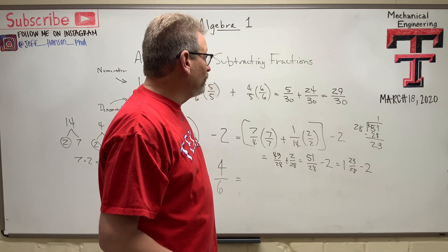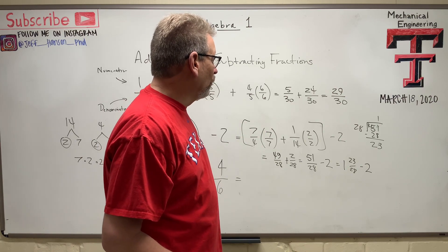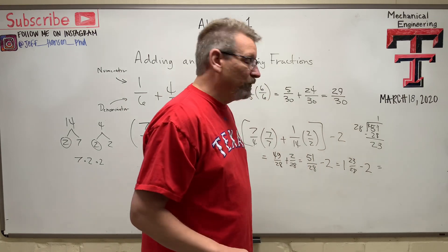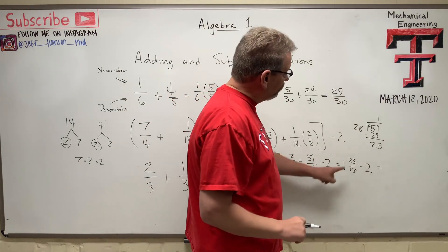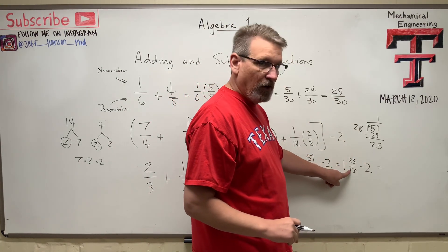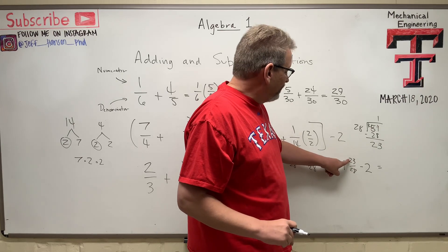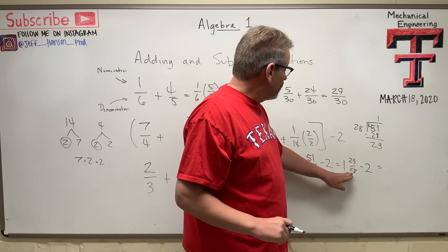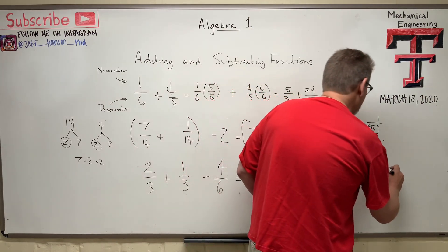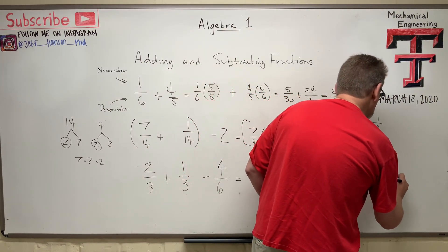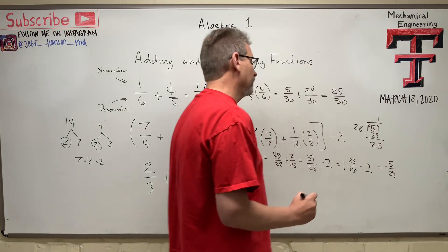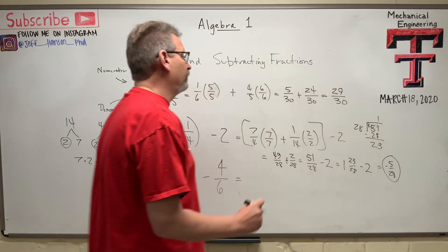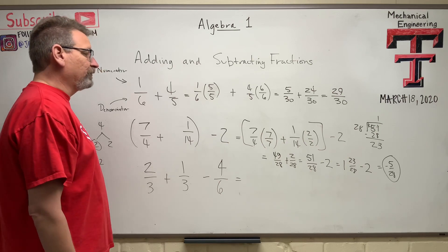So if you subtract 2 from that, you get what? And here's the way I do that. How close is 23 over 28 to being a whole thing? Well, it's only 5 28ths away from being a whole thing. So the answer is going to be negative 5 over 28. And that is the final answer on that one. That's kind of tricky, isn't it?